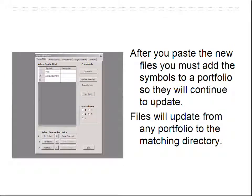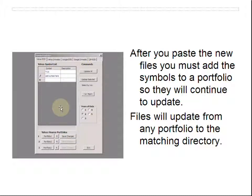Once they're in the proper directories, there's one more step. If you pasted them to the Yahoo intraday directory, you then have to go to the Yahoo EOD tab on the downloader and enter the symbols of each file you've downloaded that you want to update, then save the changes — in this case to Portfolio One. The updater will then know to update those files. You can save them in any portfolio, as long as they're in the matching directory. You can't copy files into the Google directory and expect them to update from the Yahoo EOD portfolios — it has to be the matching directory.